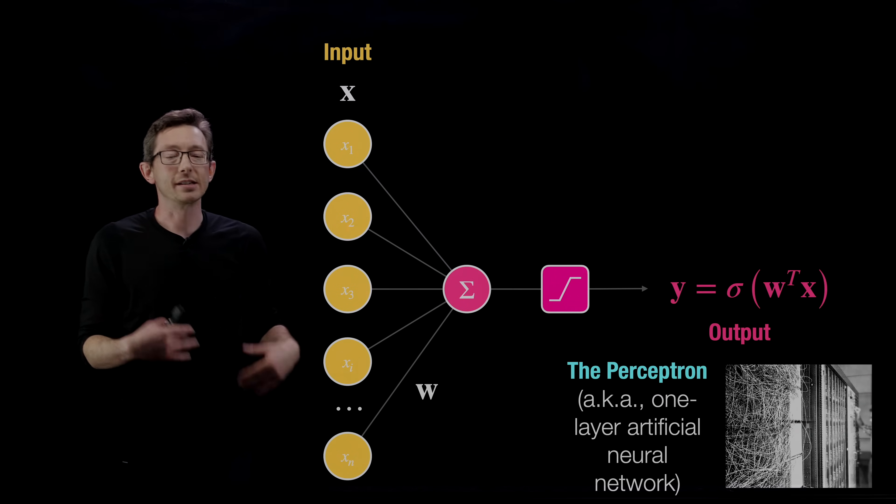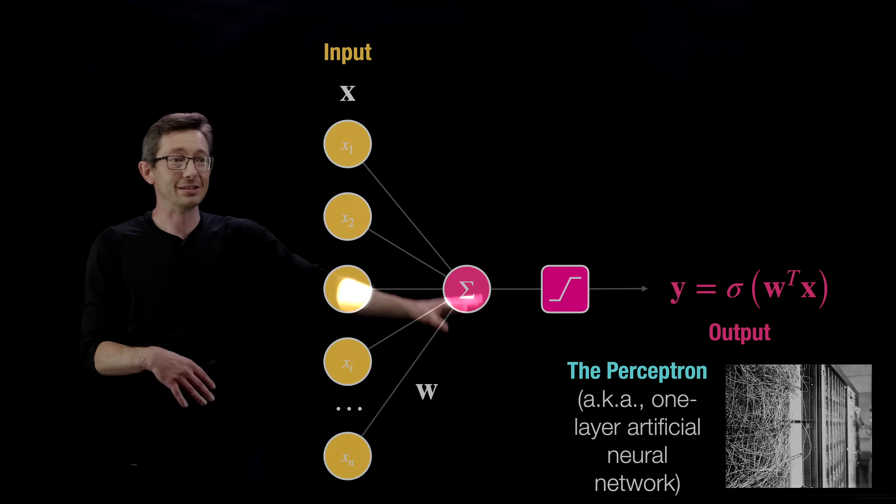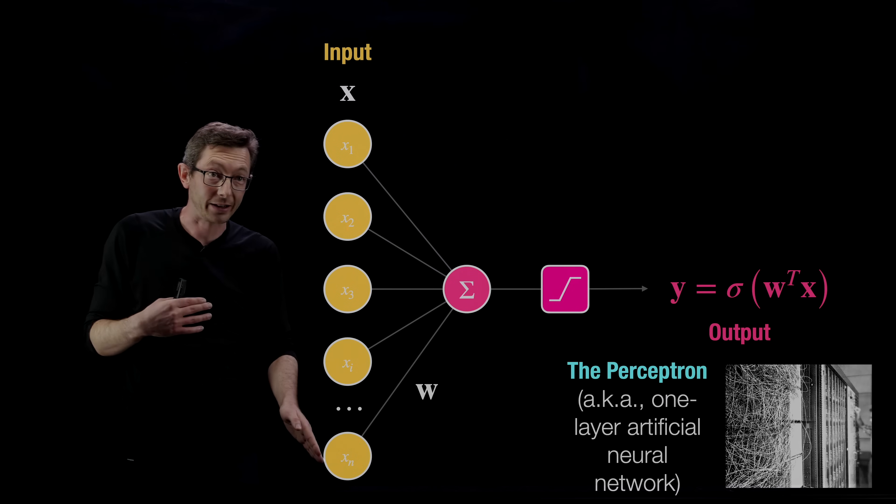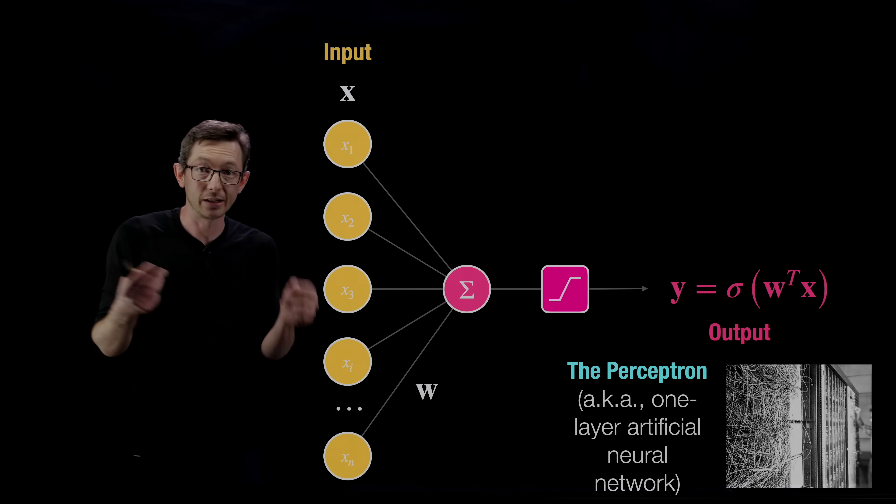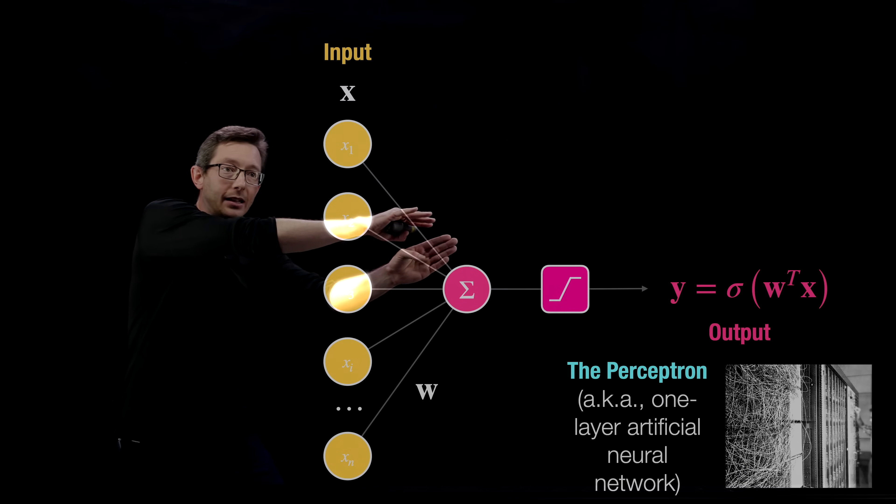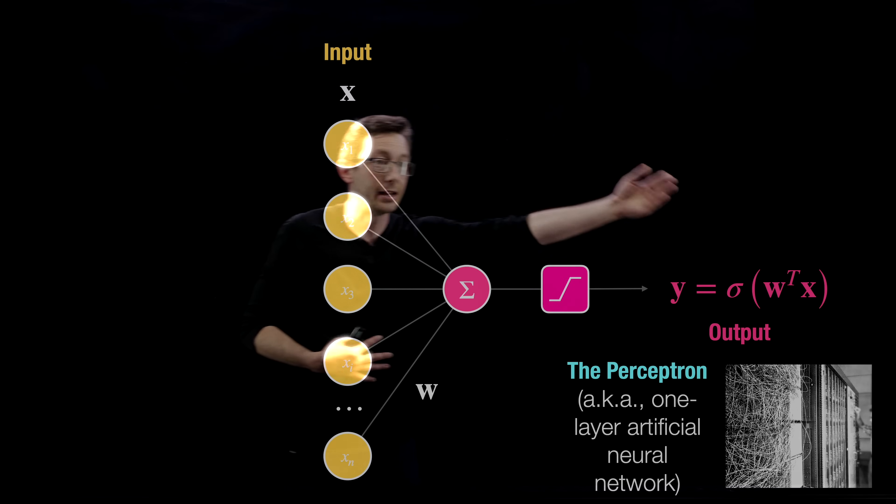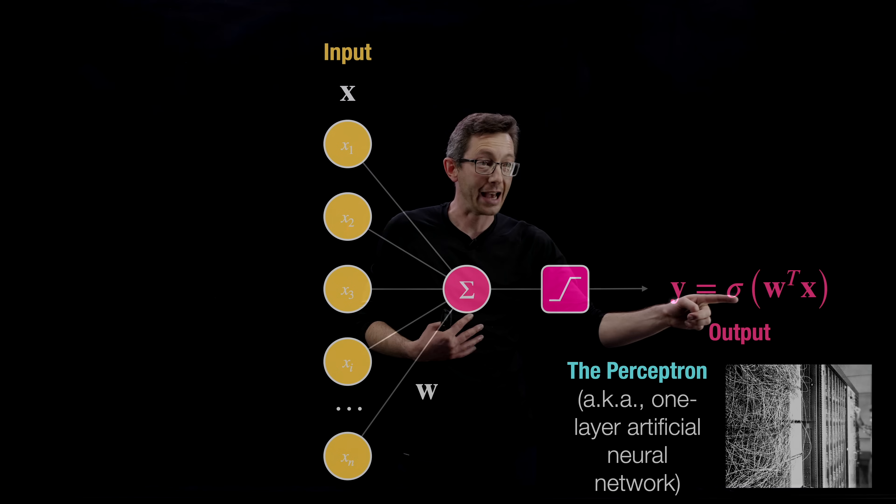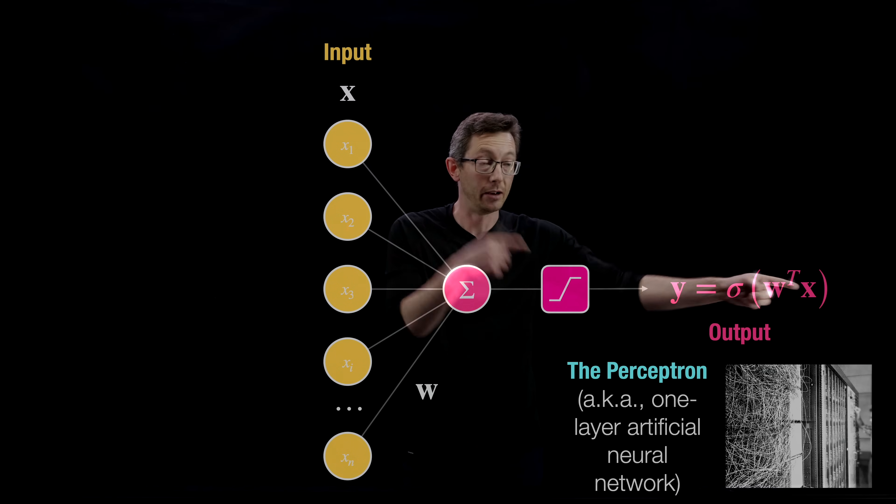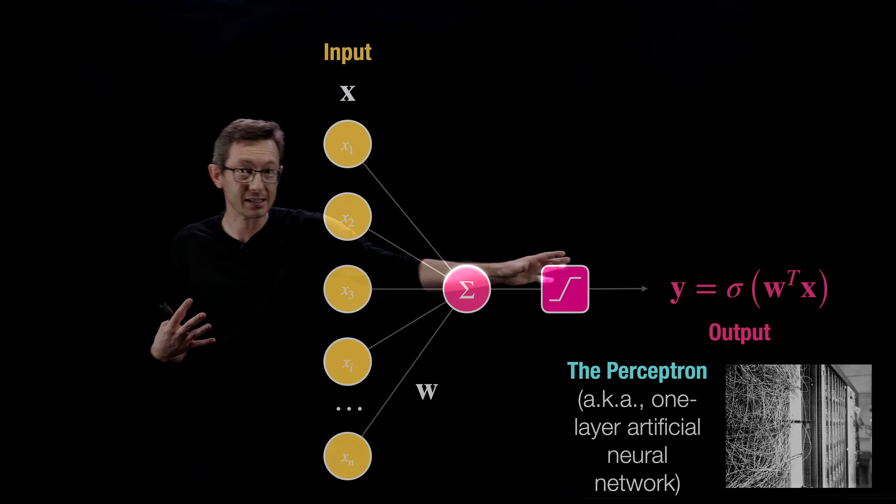So the perceptron, which is the one layer neural network proposed decades ago, essentially takes an input vector. So you take your input data, whatever it is, maybe it's an image or a time series. It takes a weighted sum of that inputs. It runs it through this nonlinear function and it gives an output. So that output is literally that sigmoidal function sigma times a weighted sum of the inputs. That's just a weight vector times x. So mathematically, this is very simple to write down.